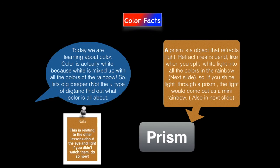Today we're learning about color. Color is actually white because the white is mixed up with all the colors in the rainbow. So, let's dig deeper, not the shovel type of dig, and find out what color is all about. Note, this is relating to the other lessons about the eye and light. If you didn't watch them, do so now.